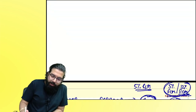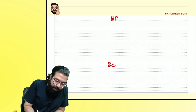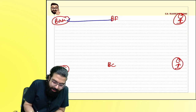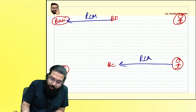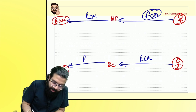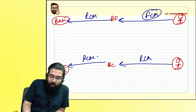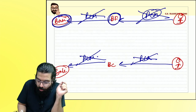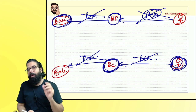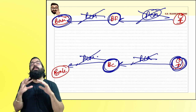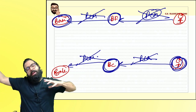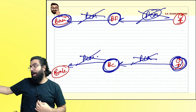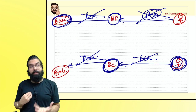To clarify the business facilitator/correspondent structure: business facilitator to bank = RCM; agent of business correspondent to business correspondent = RCM. Business correspondent to bank = forward charge; business facilitator to business facilitator's agent = forward charge. If services relate to a rural area branch, there is no GST under either forward charge or reverse charge. Business correspondent is always 'stuck' — giving to bank is forward charge, but receiving from their agent is reverse charge.